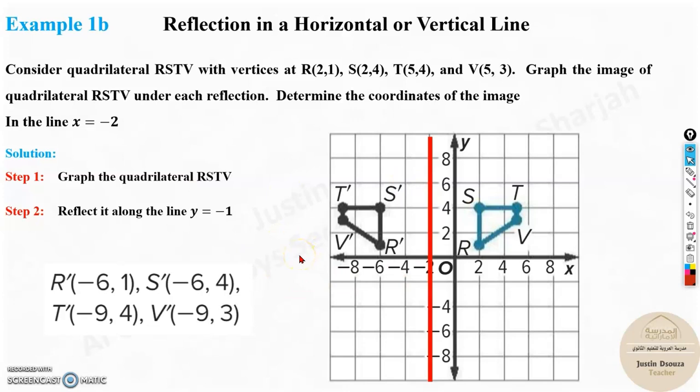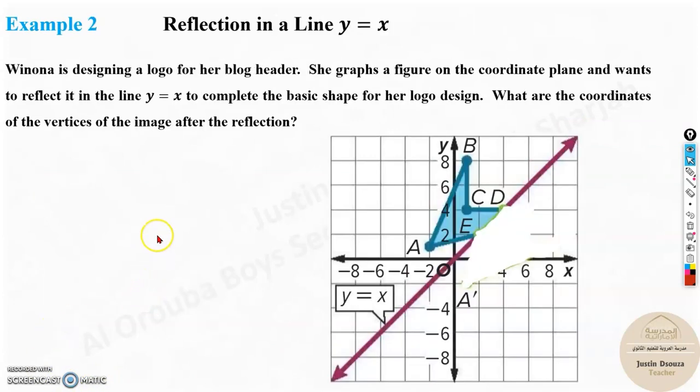In the next section, we will see reflection along the y equals x line. The last type of problem in this lesson. The second type of reflecting is along the line y equals x. This is a real world problem where Winona is designing a logo for her blog header. She graphs a figure on the coordinate plane and wants to reflect it in the line y equals x to complete the basic shape of her logo design. What are the coordinates of the vertices of the image after reflection?